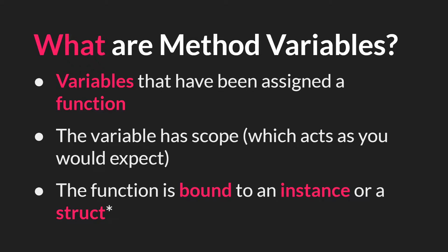Let's start with method variables. These are variables that have been assigned a function. Hopefully you watched the tutorial about data types in 2.3, so you're familiar with what this means. Essentially we're taking a reference to a function and holding that in a variable. The variable that holds the function, or the reference to the function, has scope, which acts exactly as you expect. So you can have a method variable be global scope, instance scope, or local scope, and that variable will act as expected.